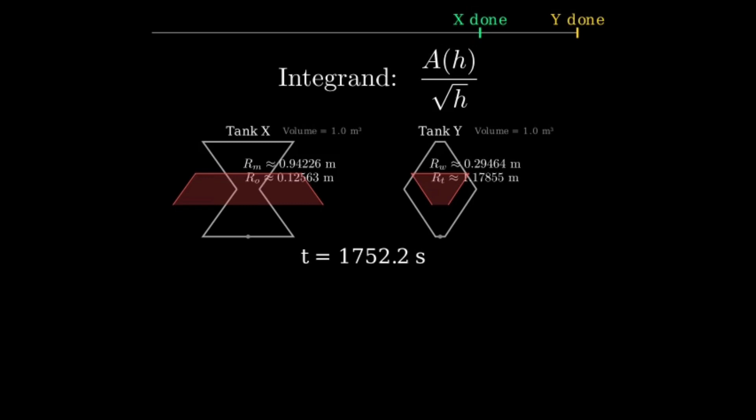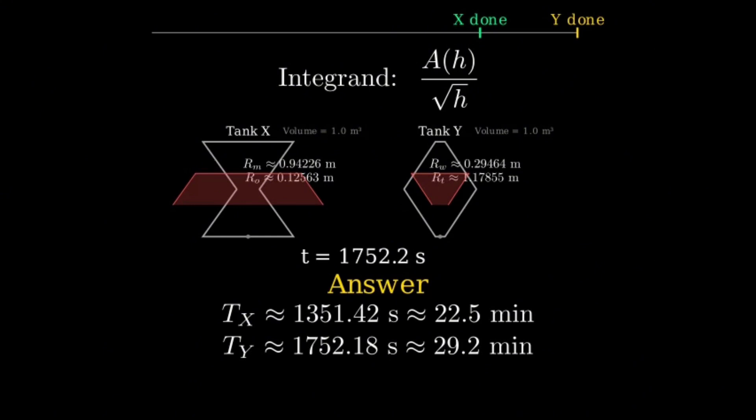Final answer. Tank X empties before Tank Y. With a realistic discharge coefficient of 0.6, the times are, for Tank X, about 22.5 minutes, and for Tank Y, about 29.2 minutes.